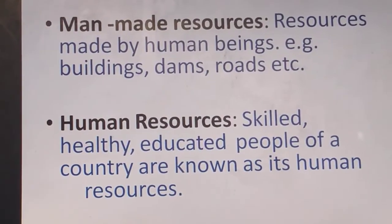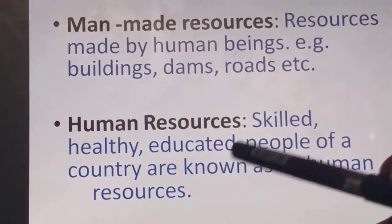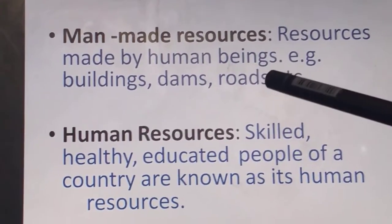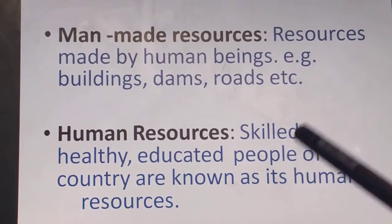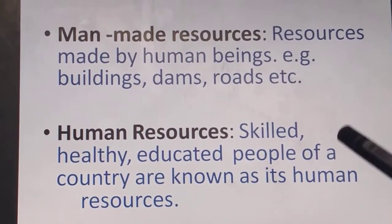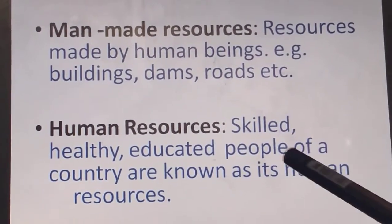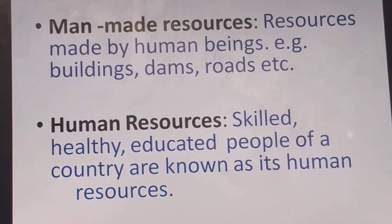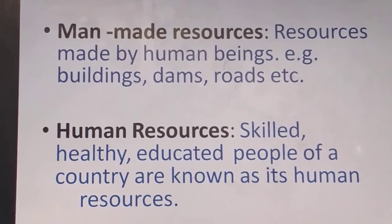Next is human resources. Most students get confused between man-made resources and human resources. The common difference is that man-made resources means the things which are made by human beings. Human resources means the people themselves — human beings themselves. Human resources refer to the quantity and quality of people. The people of a country must be more in number, but they must be skilled, healthy, and educated, because only skilled, healthy, and educated people can contribute to the development of a nation. So human resources means skilled, healthy, and educated people of a country.